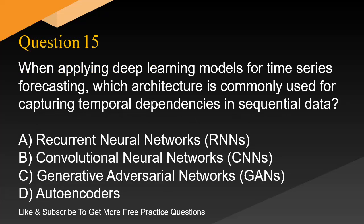Question 15. When applying deep learning models for time series forecasting, which architecture is commonly used for capturing temporal dependencies in sequential data? A. Recurrent neural networks, RNNs. B. Convolutional neural networks, CNNs. C. Generative adversarial networks, GANs. D. Auto-encoders.